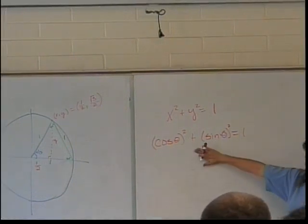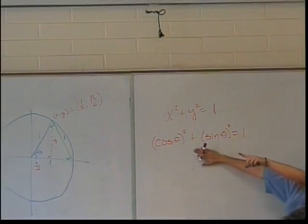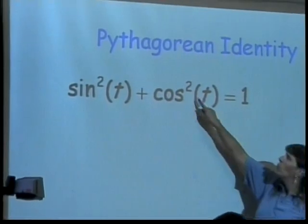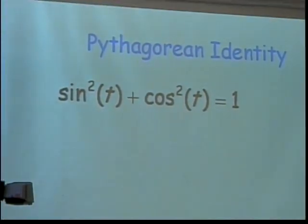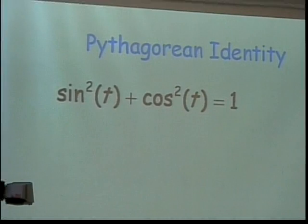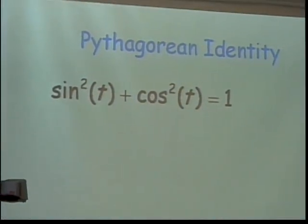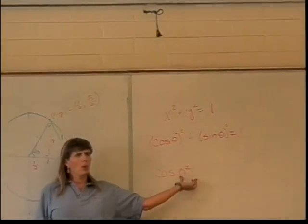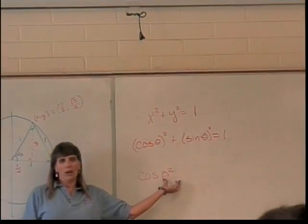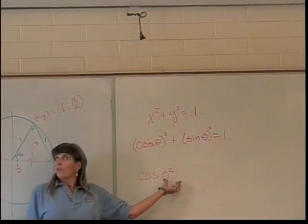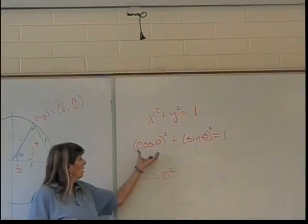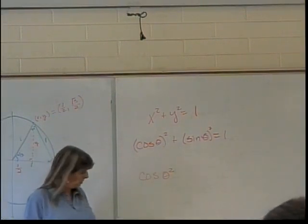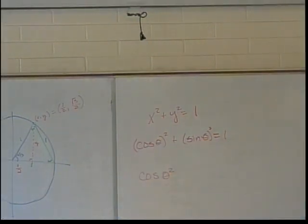Now, I wrote it this way, and some people write it that way. There's nothing wrong with putting it here. This indicates that you're squaring the function value. If you were to write cosine of theta squared, this indicates you're squaring the angle, not the value of cosine of theta. So, that's one reason a lot of people write it that way, because you can use fewer parentheses. But, you'll also see them written this way, with the parentheses. Web work writes them both ways. Depends on who wrote the problem.